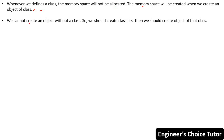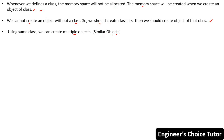We cannot create an object without a class, so we should create the class first, then create an object of that class. Using the same class, we can create multiple objects, which are called similar objects or identical objects. Just as using the same blueprint of a home we can construct multiple homes, in the same way, using the same class we can create multiple objects. Therefore, class is a reusable component in Java, because using the same class we can create multiple objects.